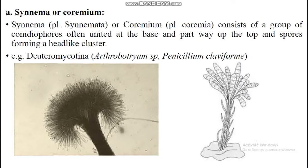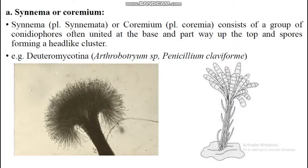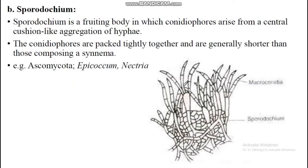Coremium, also called synnema, is an older term but synnema is the newer accepted name. Conidiophores are compacted at the base with conidia at the top forming a cluster. Sporodochium is a fruiting body in which the conidiophores are packed tightly together and are generally shorter, forming a cushion-like sign.